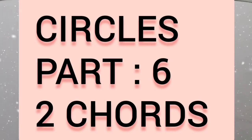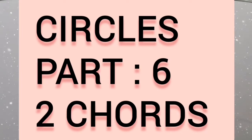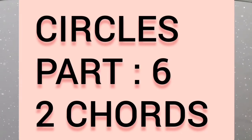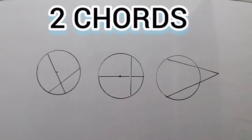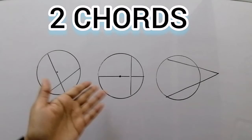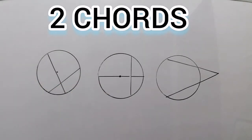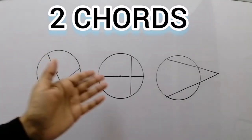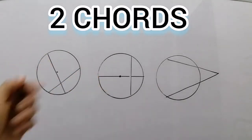Our new topic in this chapter is two chords. Here you can see I have drawn three circles and different types of chords are drawn inside these circles.